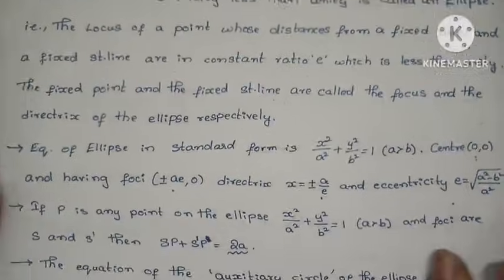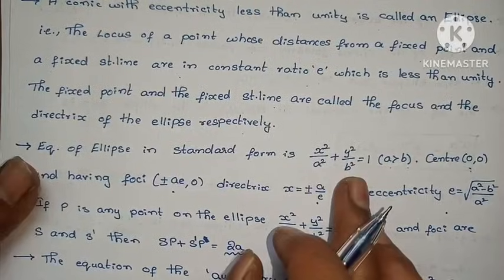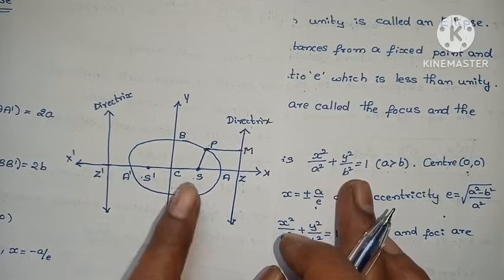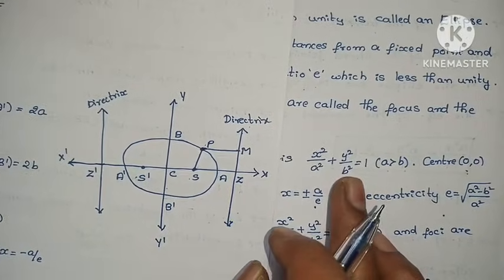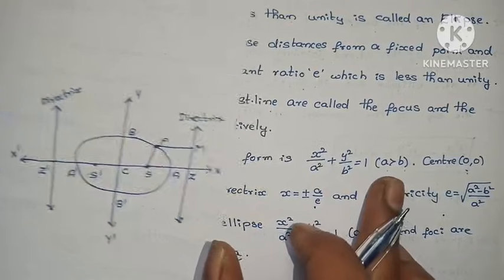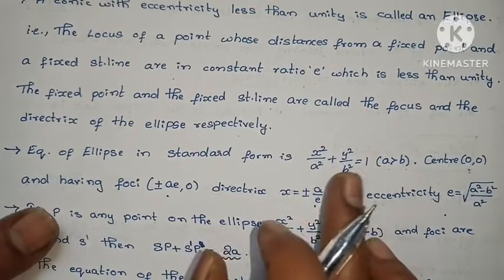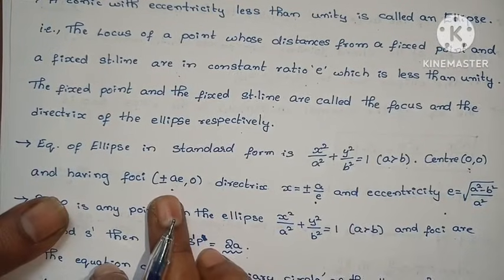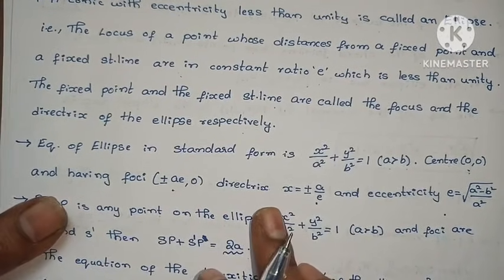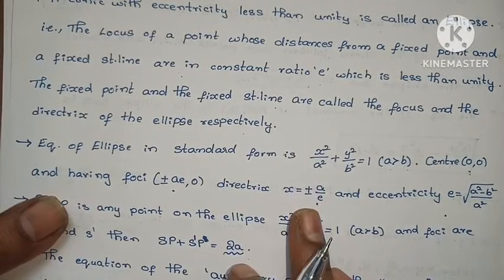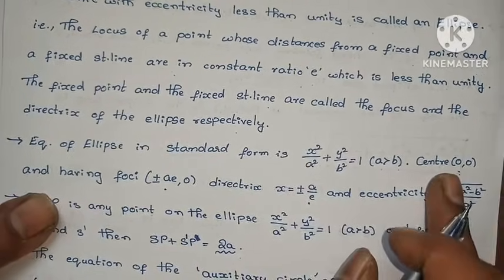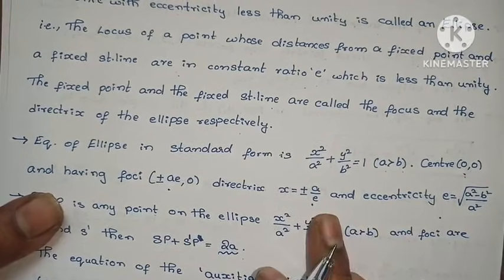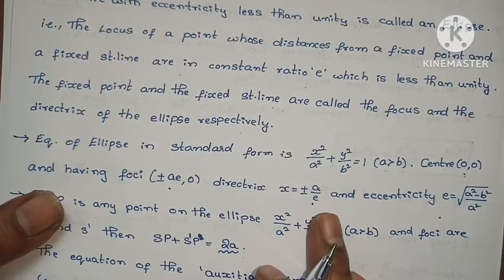The equation of ellipse in standard form: x² by a² plus y² by b² equals to 1. For a greater than b, the ellipse center is (0,0), focus is (±ae, 0), and directrix is x equals to ±a by e.